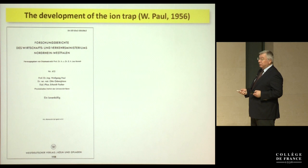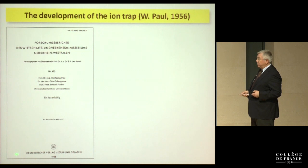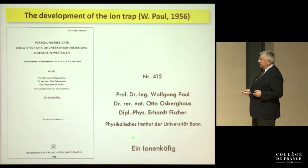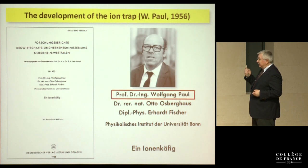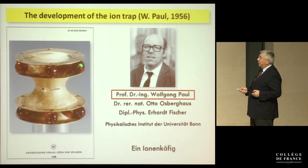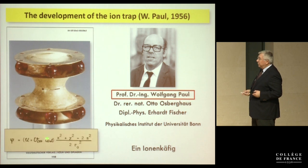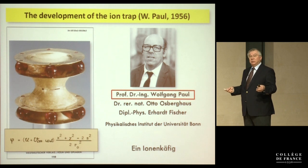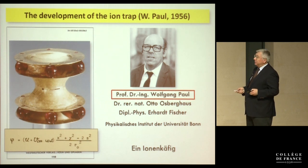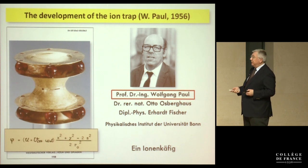This ion trap business started in 1956 with Wolfgang Paul. His original publication, 'Ein Ionenkäfig' — an ion trap — describes the Paul trap, a device with a hyperbolic potential shape where you apply a DC voltage and an AC voltage to create, inside this cage, a field that can trap even single atoms. That became the starting point for very many investigations.